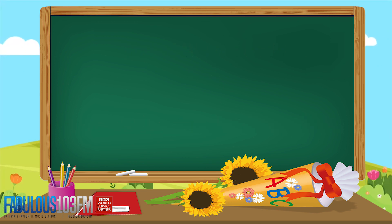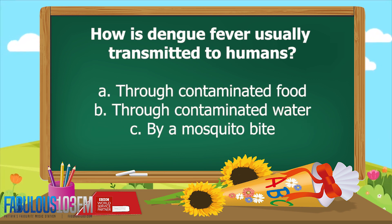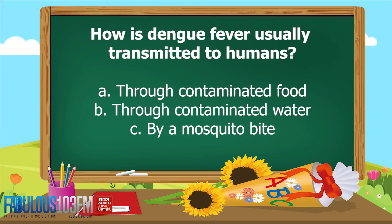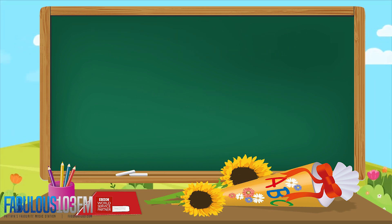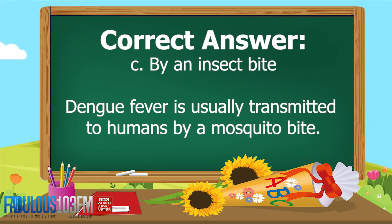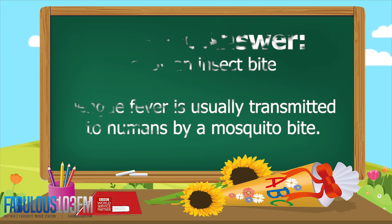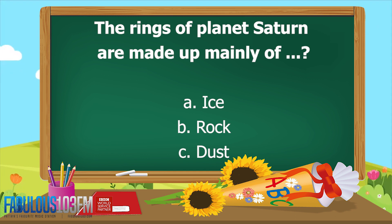The second question yesterday was: after a recent warning of a rise in dengue fever cases in Thailand, how is dengue fever usually transmitted to humans? Is it A: through contaminated food, B: through contaminated water, or C: by a mosquito bite? The correct answer is by a mosquito bite. Dengue fever is usually transmitted to humans by a mosquito bite, so take extra care and be careful of those mosquitoes.